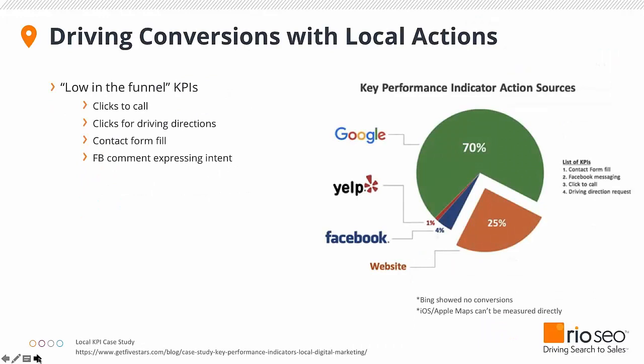Lower in the funnel, think about how Google, Yelp, and Facebook impact what people actually do — are they clicking to call, getting driving directions, filling out a form? That information is being pushed back to the brand so they can improve the experience. I'd like to ask Elnora: as a brand with 20,000 locations, what do you see as the most important pieces coming from Google My Business listings back to the business?